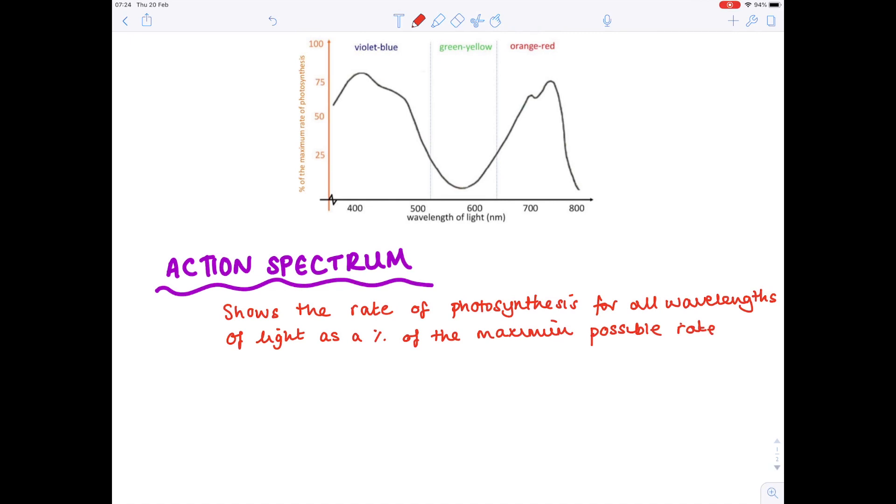And so what we're really saying here is that the efficiency of photosynthesis is not the same in all wavelengths of light because remember visible light is made up of lots of different colours and they all have different wavelengths. Now the graph I've inserted here is actually known as the action spectrum of photosynthesis so let's label that here.